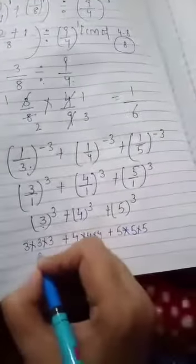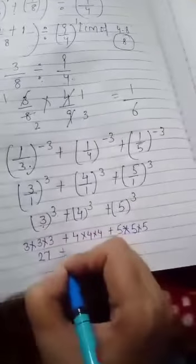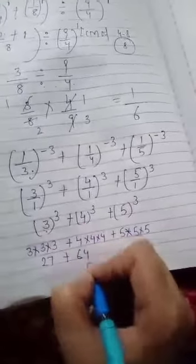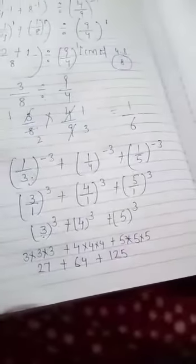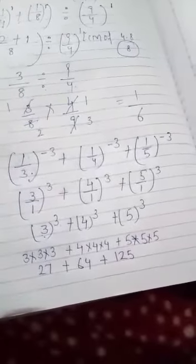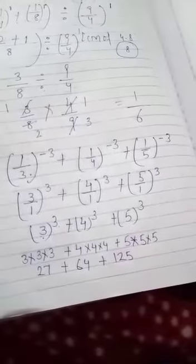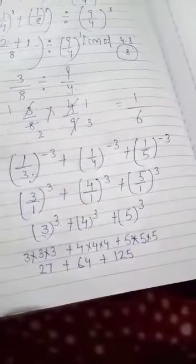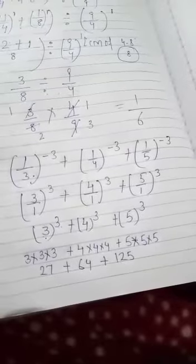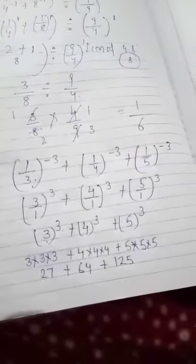3 times 3 is 9, 9 times 3 is 27. 4 cubed is 64, 5 cubed is 125. 27 plus 64 plus 125, the answer is 216.